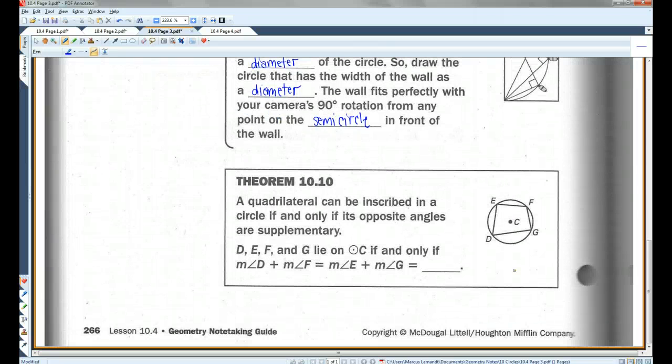Theorem 10.10, a quadrilateral can be inscribed in a circle if and only if its opposite angles are supplementary. So, these points lie in the circle if and only if this angle and this angle equals this angle plus this angle which equals 180 degrees. Last page.